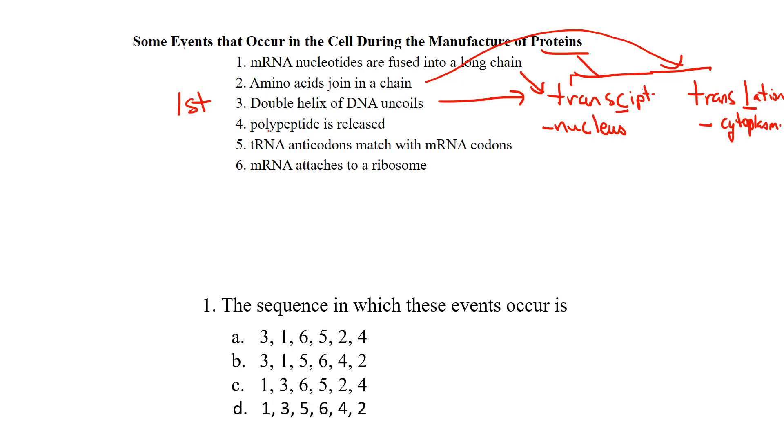Polypeptide is released. Polypeptide, just another word for protein. That's happening down here later on in the process. Transfer RNA anticodons match with messenger RNA. That happens here later on in the process. Transfer RNA, of course, they're bringing the amino acids to the messenger RNA strand. And messenger RNA attaches to ribosomes. That's happening later on in the process. So because of that, we know that number three is the first thing that's going to happen. As soon as we know that, we can eliminate C and D, cross those right out. We know those can't be any of the possibilities.